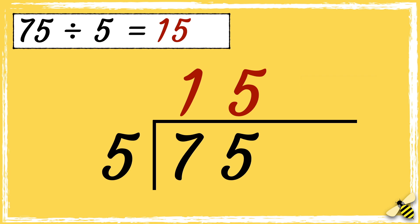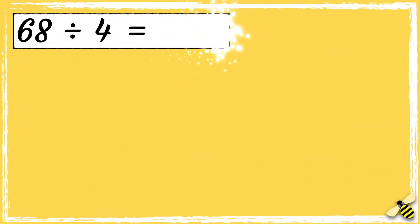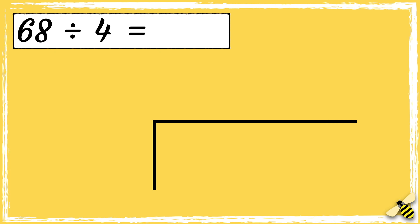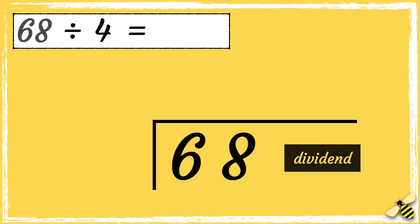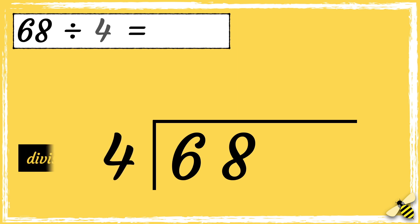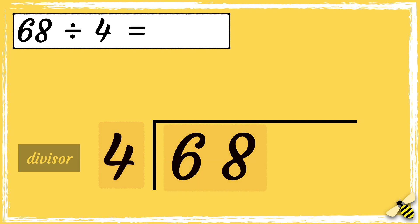Let's have a look at another example: 68 divided by 4. First we need to draw our bus stop. We put the dividend inside the bus stop and we put the divisor next to the bus stop. What we need to do is find out how many times our divisor fits into these numbers.